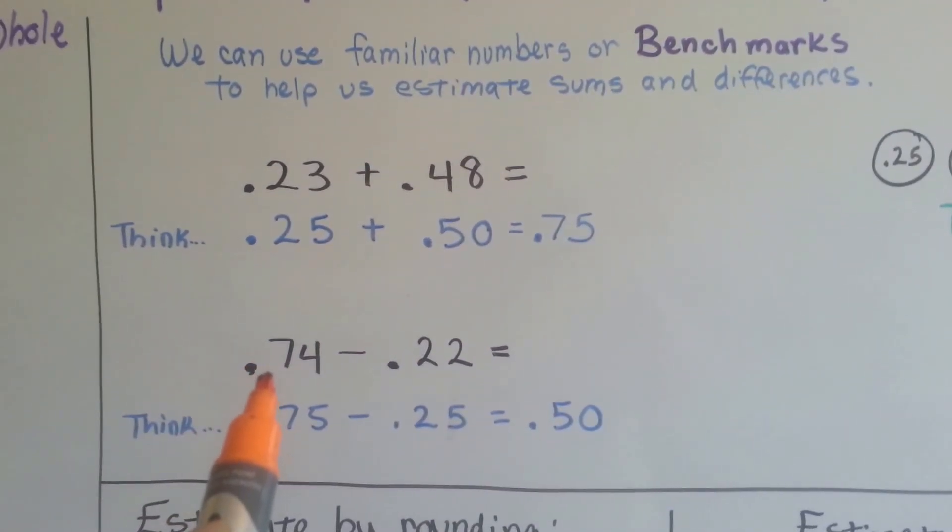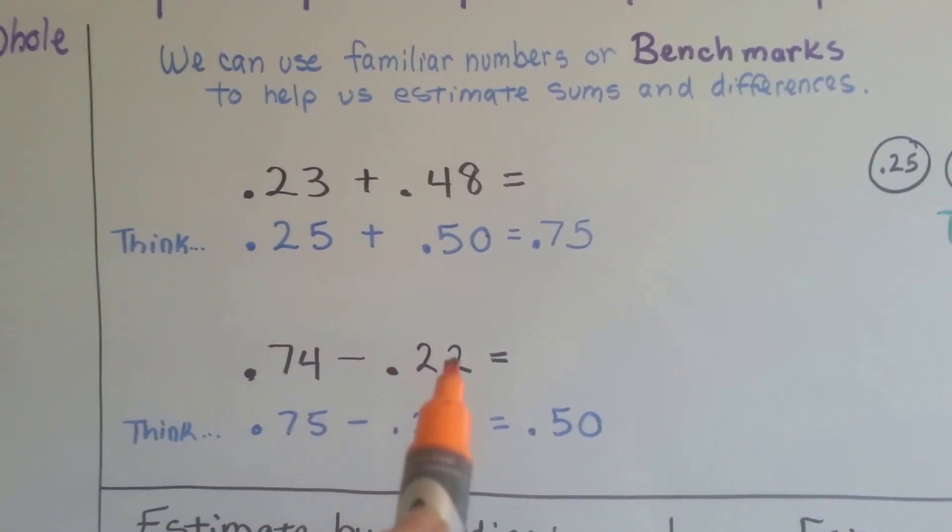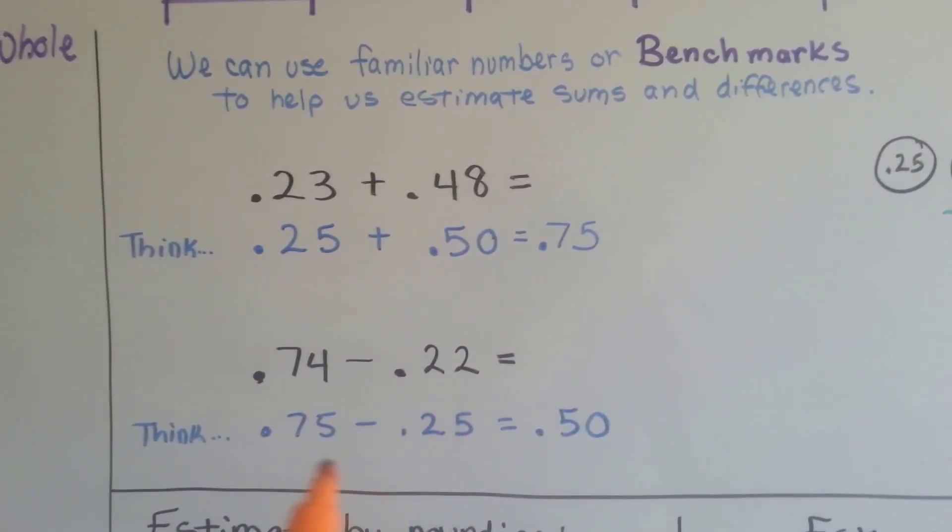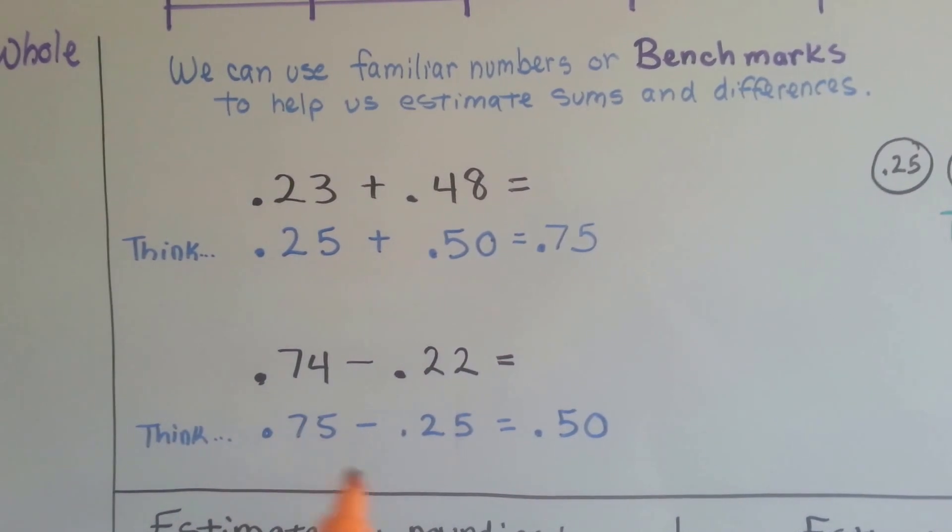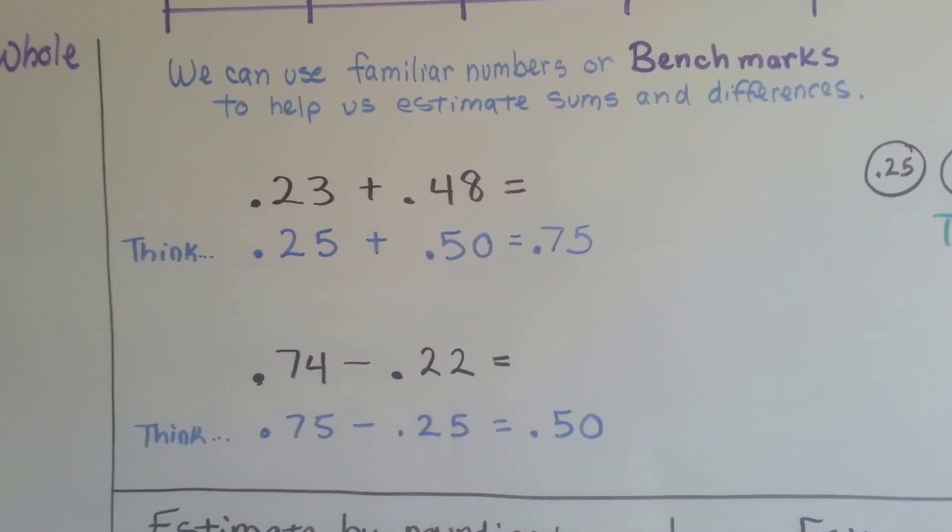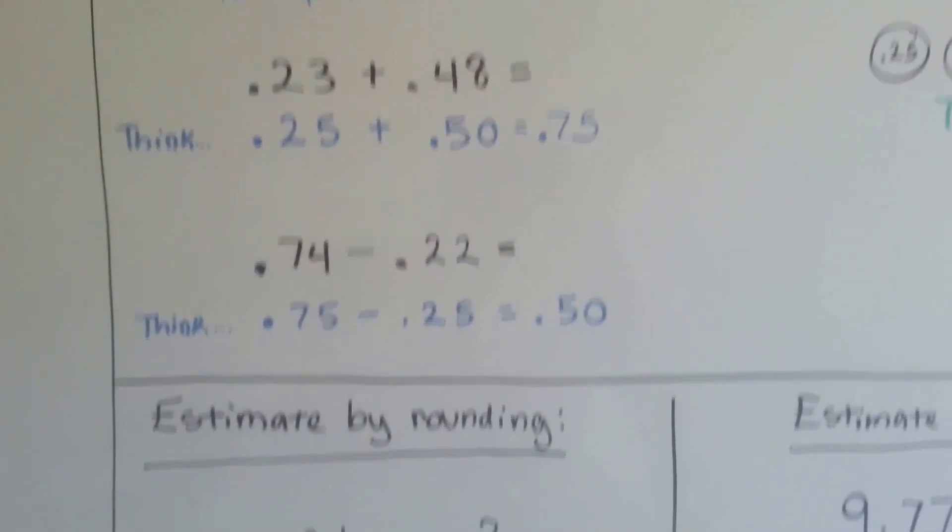If you had to do subtraction and had 74 hundredths minus 22 hundredths, you could think money and think $0.75 minus $0.25 is $0.50. And then you can estimate your difference.